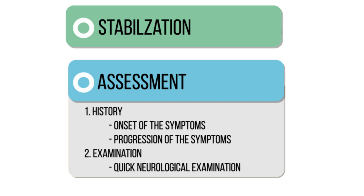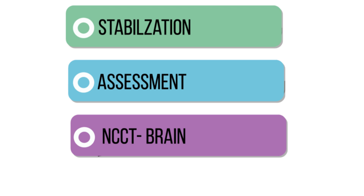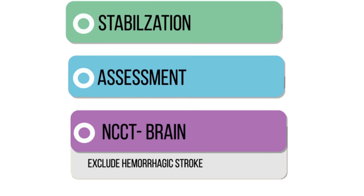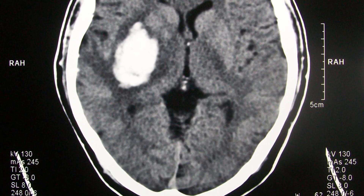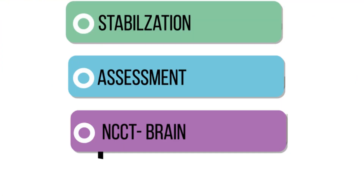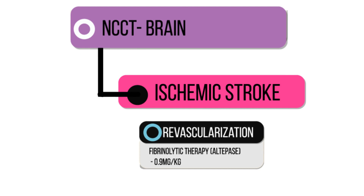The history is followed up with a quick neurological examination. After the assessment, get a non-contrast CT scan of the brain. Look for hemorrhagic changes, as the management of hemorrhagic strokes completely differs from that of ischemic strokes. If you were able to exclude hemorrhagic stroke, consider it as ischemic and proceed with the algorithm. Remember that ischemic features on CT scan are delayed — CT scan is used only to exclude hemorrhagic strokes.